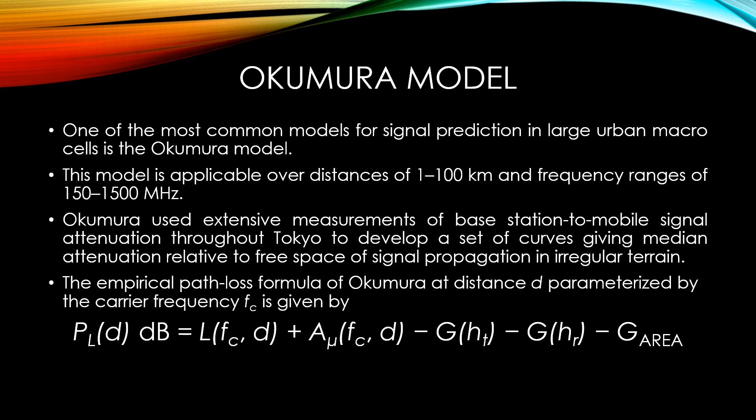Where L(fc, d) is the free space path loss at distance d, Amu is the median attenuation in addition to free space path loss across all environments, G(ht) is the base station antenna height gain factor, G(hr) is the mobile antenna height gain factor, and Garea is the gain due to the type of environment. Okumura's model has a 10 to 14 dB empirical standard deviation between the path loss predicted by the model and the path loss associated with one of the measurements used to develop the model.